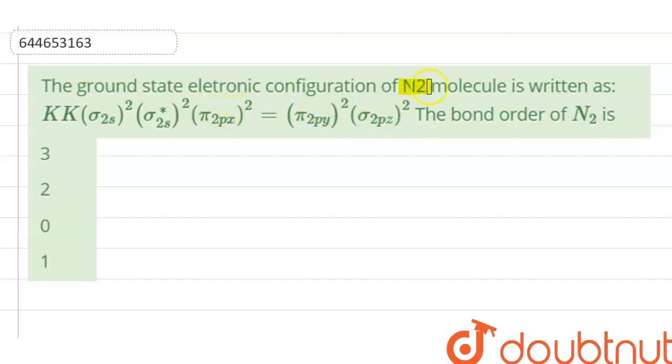Our question is: ground state electronic configuration of N2 molecule is written as KK shell - KK means sigma 1s², sigma star 1s², sigma 2s², sigma star 2s², pi 2px² equal to pi 2py² and sigma 2pz². The bond order of N2 is...